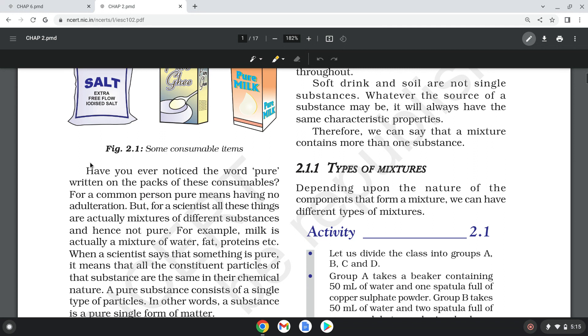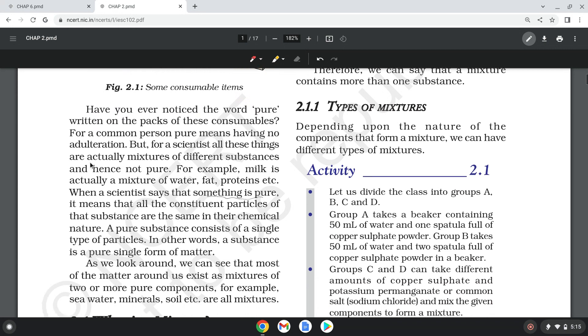When scientists say something is pure, it means the particles and substances are the same. The chemical nature is the same. A pure substance is a single type of particle - a pure single form of matter.